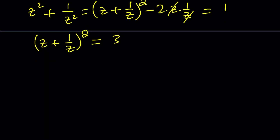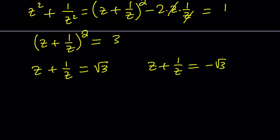You might be thinking maybe there are real solutions — can we find a number that satisfies this? Let's find out. From here we get two solutions: z plus one over z equals square root of three, and z plus one over z equals negative square root of three.